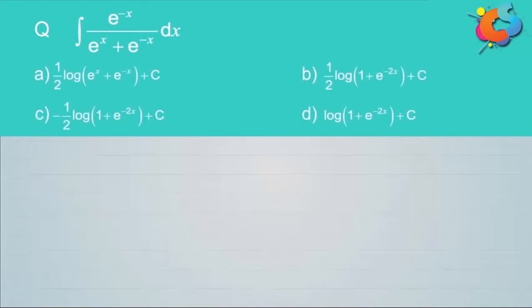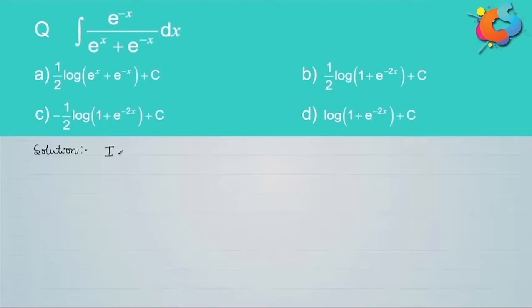Find the integral of e to the power of minus x over (e to the x plus e to the minus x). The first option, log of (e to the x plus e to the minus x), cannot be correct because the numerator must be the differential of the denominator for a log form. Looking at the remaining options b, c, and d, all are of the form log of (1 plus e to the power of minus 2x), so we need to express the integrand with denominator in the form 1 plus e to the power of minus 2x.